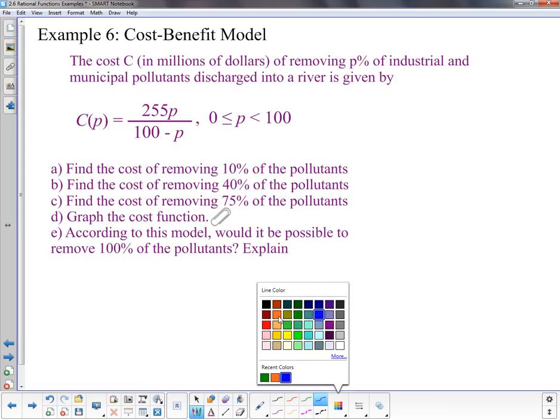We're going to look at how we can solve these things. So we have C cost in millions of dollars removing some percentage of industrial and municipal pollutants that have been put into a river. So there's a formula they gave us. It's 255 times the percentage you want divided by the percentage minus from 100. And that is a rational function because we have a linear over a linear. It's of degree 1 on top and the bottom. So again, we know a lot about its asymptotes.